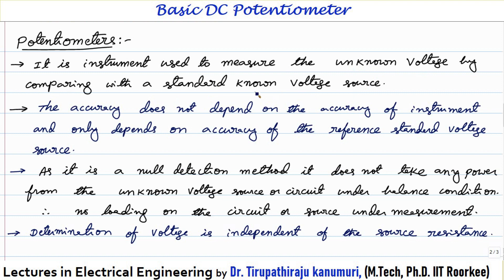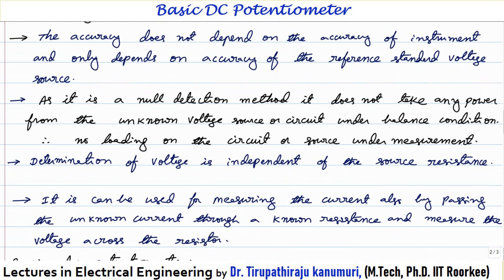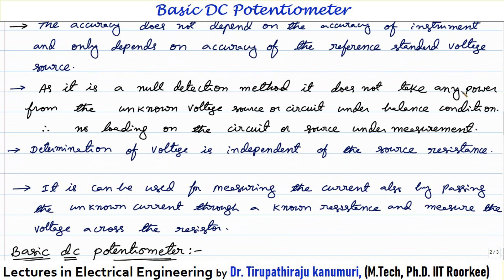As you are comparing with the standard voltage source, it is basically a comparison-based method and a null detection-based method. The accuracy does not depend on the accuracy of the instrument because it is a null detection method — only a galvanometer is used to detect the null position. The accuracy only depends on the accuracy of the reference standard voltage source, and as it is a null detection method, it does not consume any power from the unknown voltage source under balanced conditions.